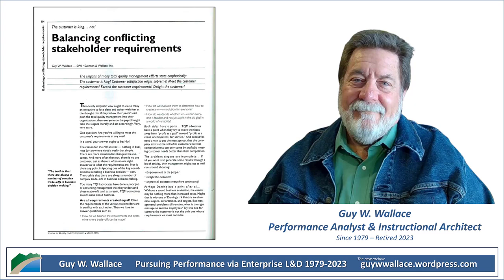Customers might be all about affordability, or maybe top-notch quality is their thing. Employees want fair wages and job security. Investors want to see those returns. And the community might be worried about the environmental impact. So everybody at the table wants something a little different — that's a recipe for a clash. How do you reconcile all that?